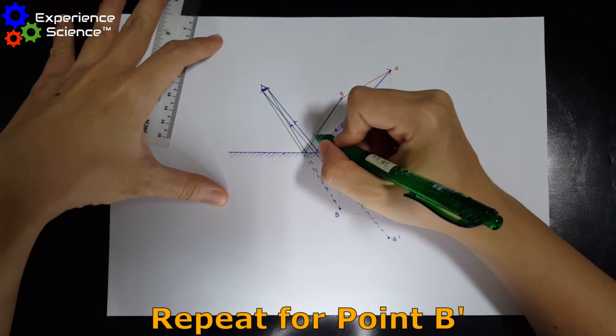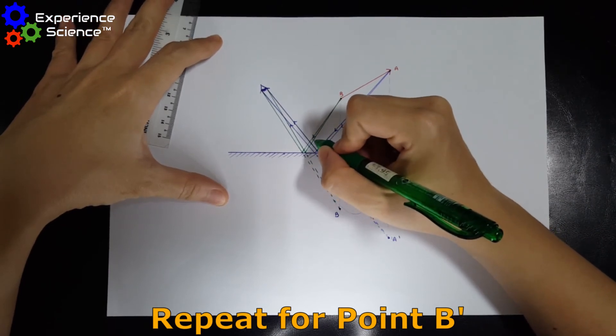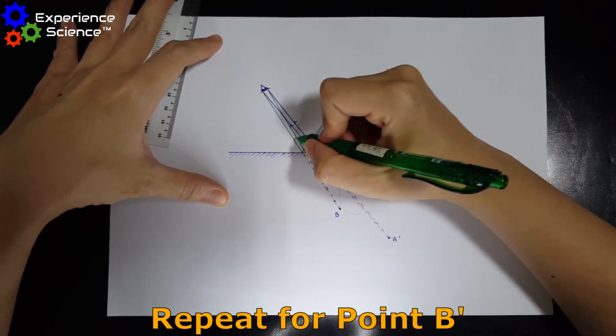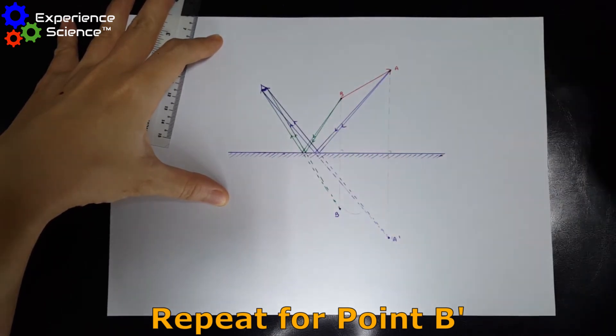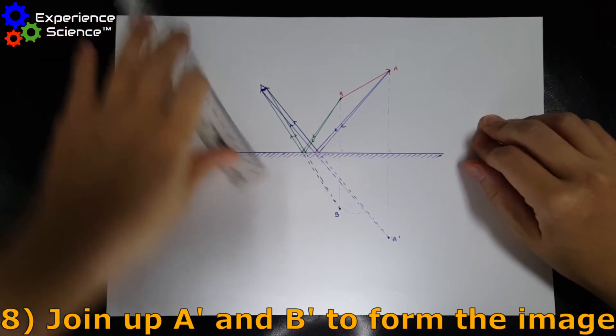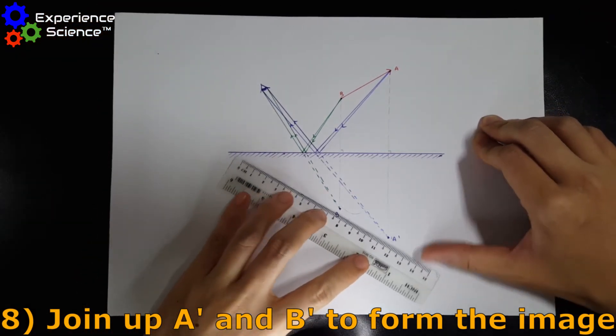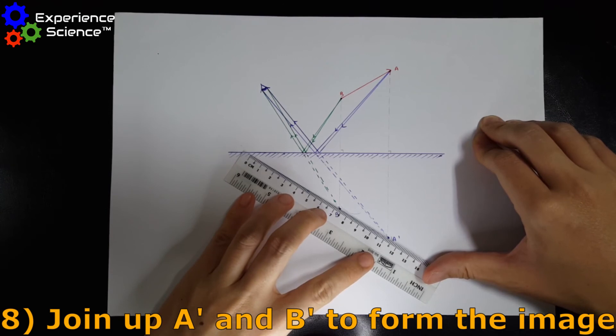And we fill in the arrows to show how light travels. So finally, we will join up A' and B' to form the final image that you see.